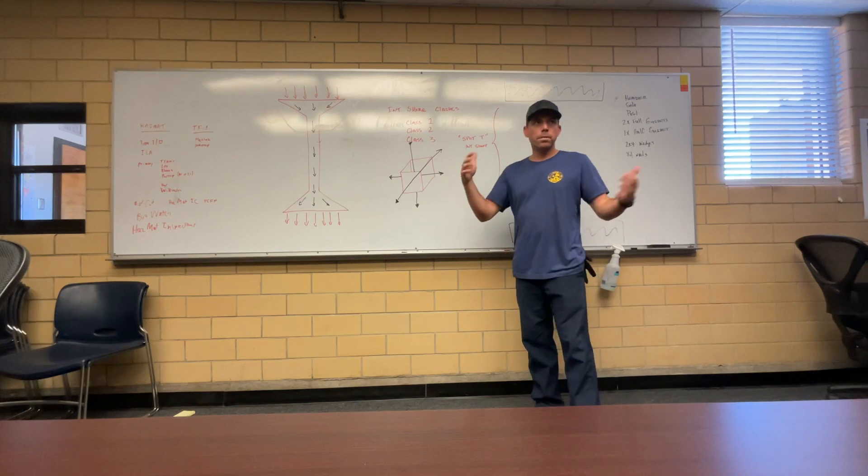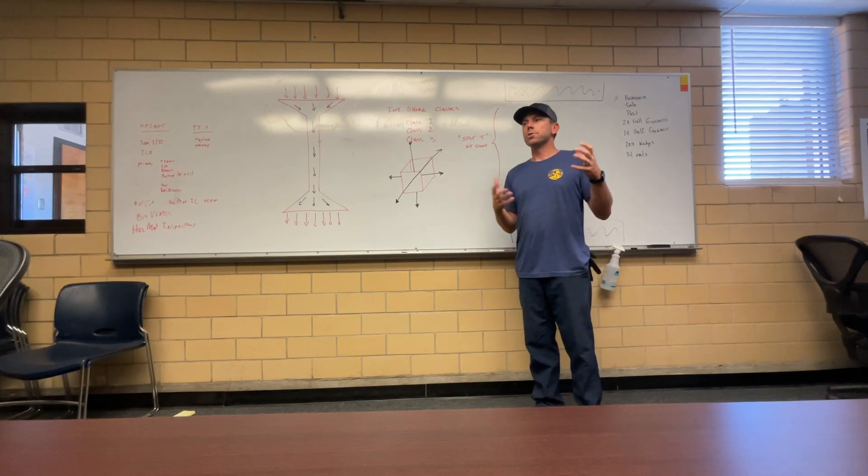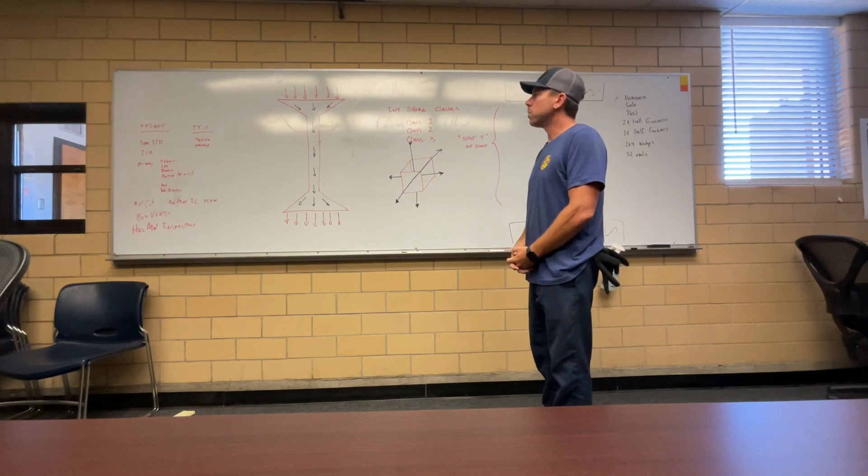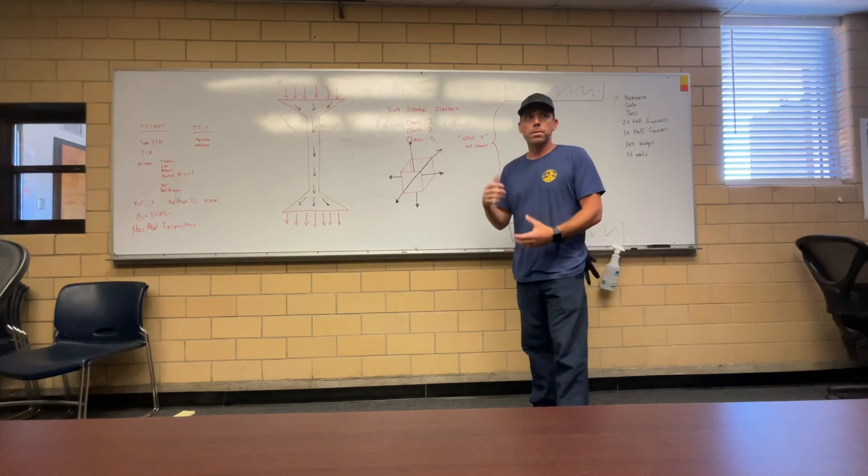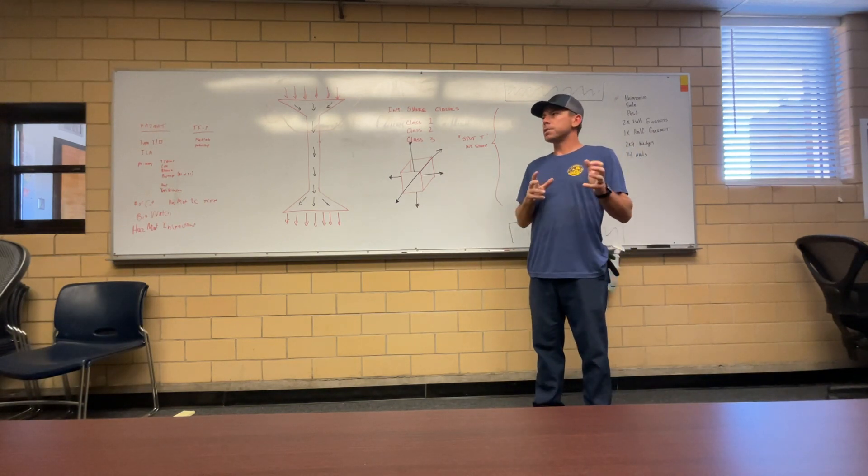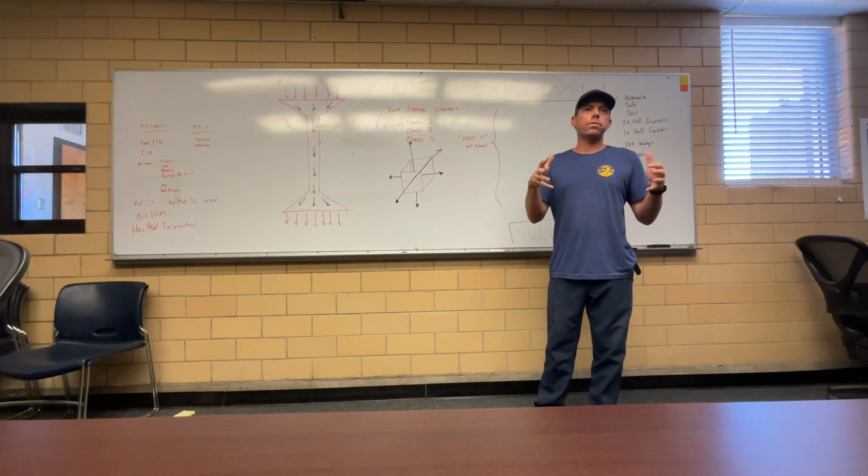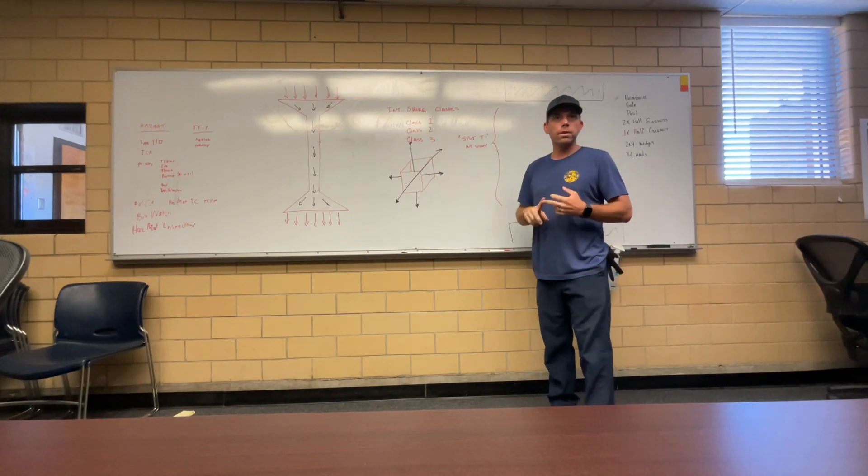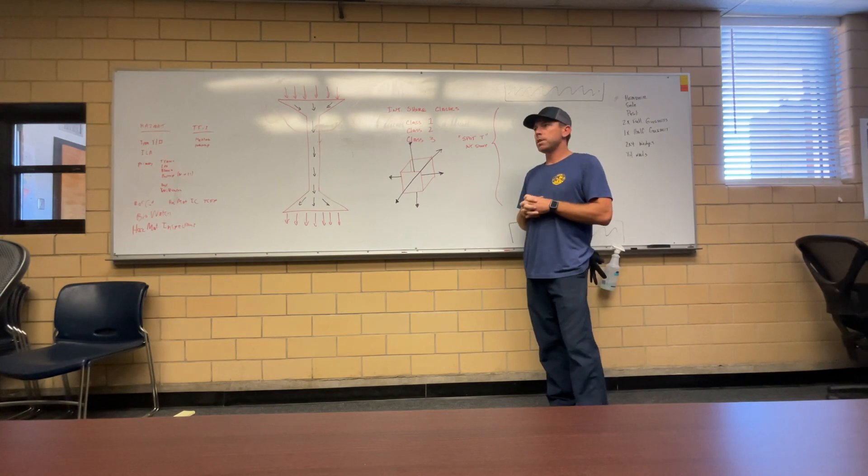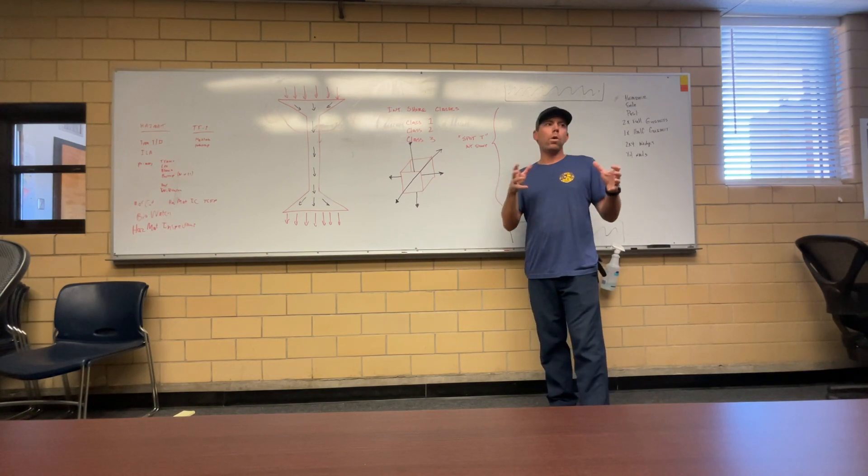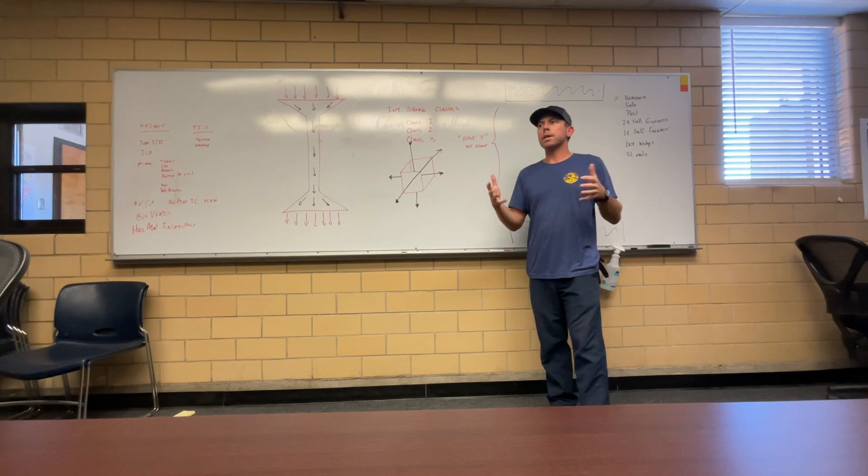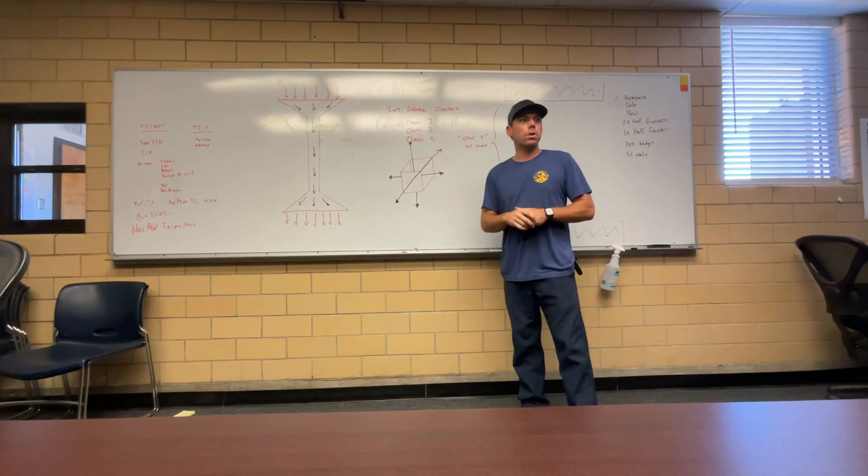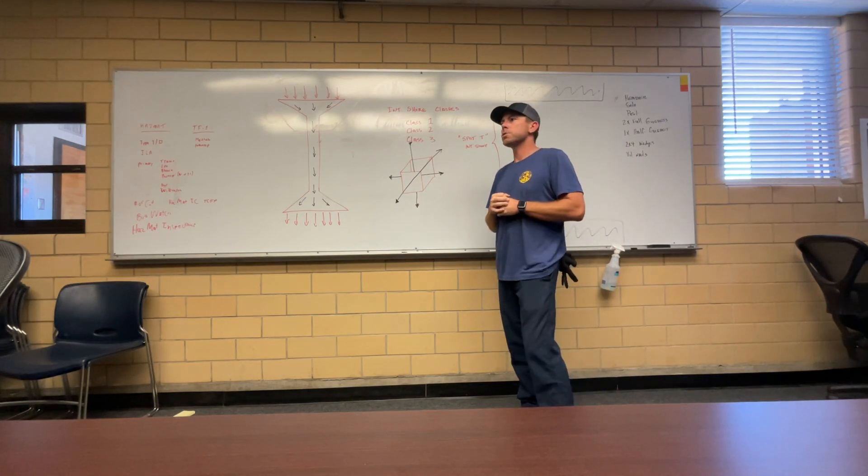So that is your blueprint for anything that you're going to build in the structural collapse community. Alright, so moving on, now we understand exactly what a shore is doing in principle - funneling, transferring and redistributing the weight of the structure that we're stabilizing. Let's talk a little bit about different types of shores. First off we have interior and exterior shores. Today we're going to focus primarily on interior shores. Of the interior shores we have three classes: a class one, a class two, and a class three.